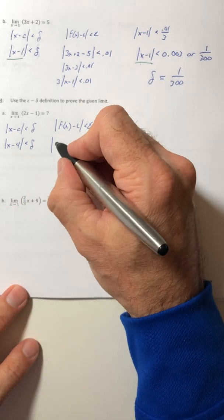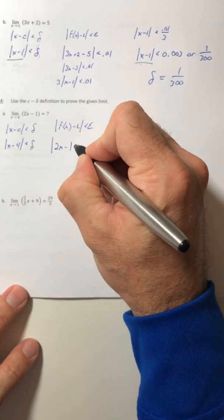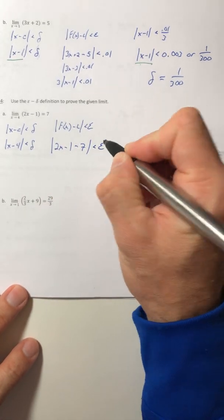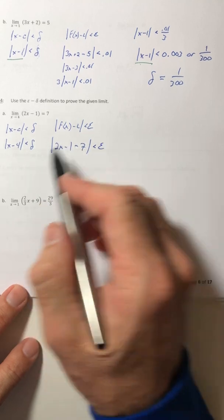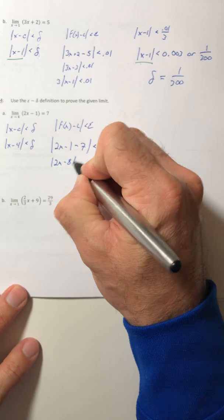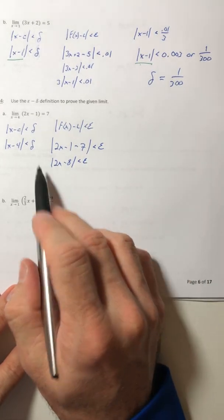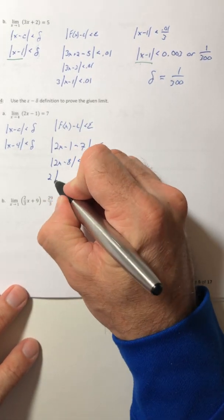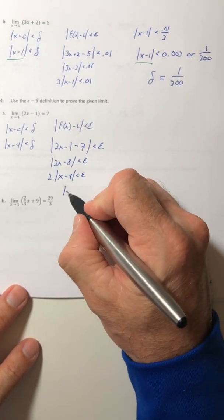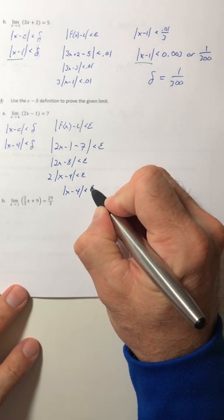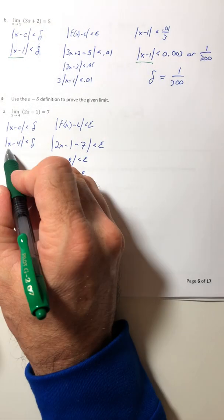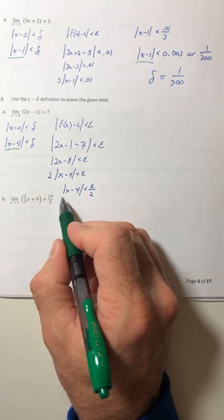Your limit value is 7. And start playing with this and get it to match that x minus 4. So combine like terms. Divide by 2. And there you go. So now they match up. You have an absolute value of x minus 4 and another one right here.